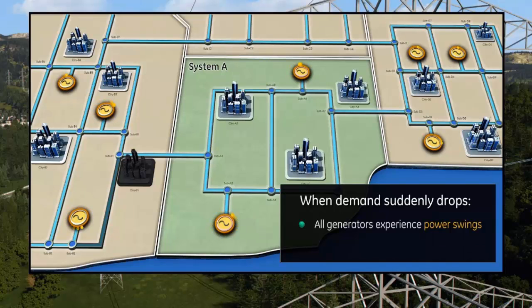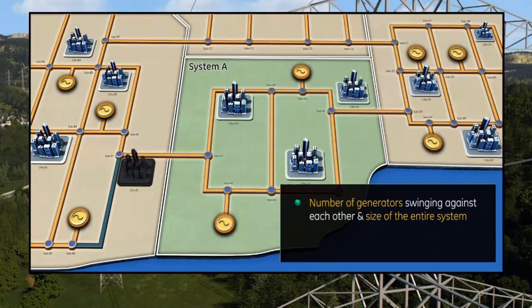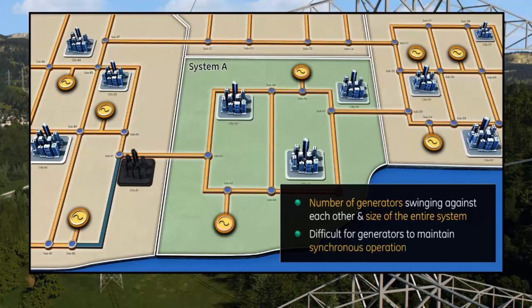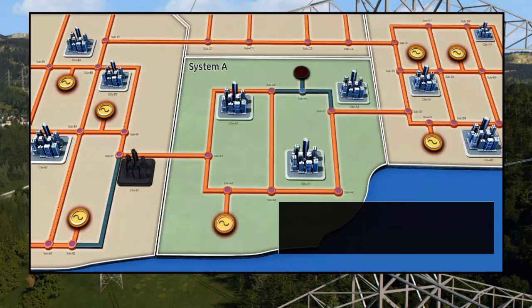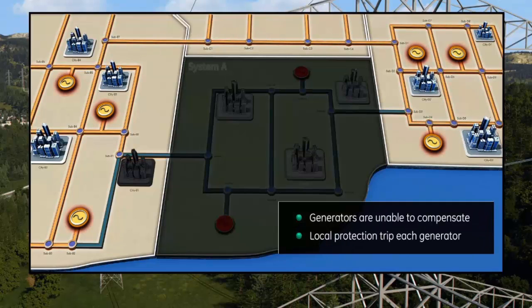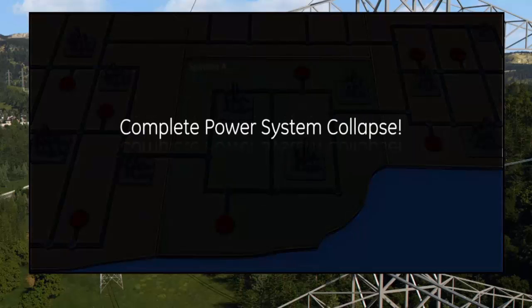When such a large amount of demand suddenly drops, all system generators begin to experience power swings as they compensate for the change in power requirements. Since they are all working independently, they begin to swing against each other, causing inter-area oscillations across the entire system. The number of generators swinging against each other combined with the large size of the system makes it difficult to maintain synchronous operation. Over time, one of the generators in System A is tripped offline to prevent damage.